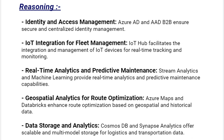Our next reasoning is Real-Time Analytics and Predictive Maintenance: Stream Analytics and Machine Learning provide real-time analytics and predictive maintenance capabilities. Next reasoning is Geospatial Analytics for Route Optimization: Azure Maps and Databricks enhance route optimization based on geospatial and historical data. Our next reasoning is Data Storage and Analytics: Cosmos DB and Synapse Analytics offer scalable and multi-model storage for logistics and transportation data.